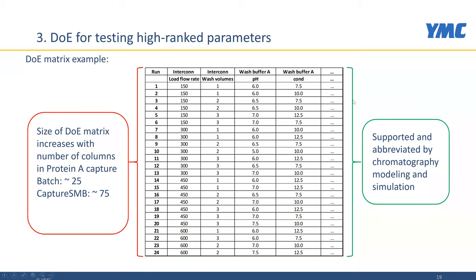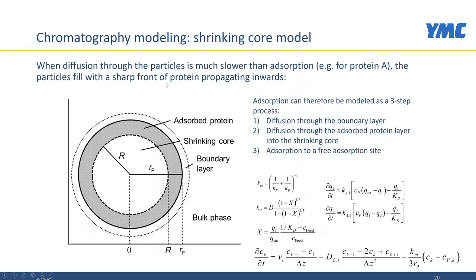In order to arrive at a reasonable number of experiments, we investigated ways to reduce the size of this DOE matrix. One way is chromatography modeling and simulation. FDA is very supportive of this approach. This is the academic—and optional—part of the validation procedure. You can go that way, but you don't have to. This part involves mechanistic modeling of the Protein A adsorption process.